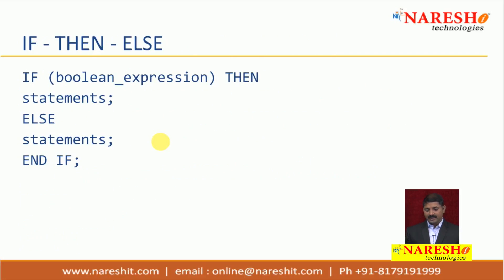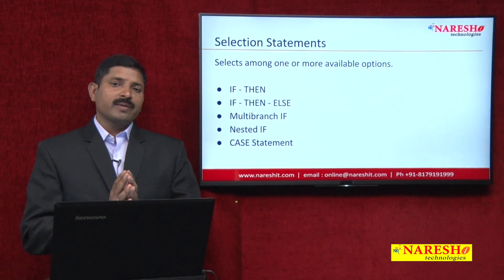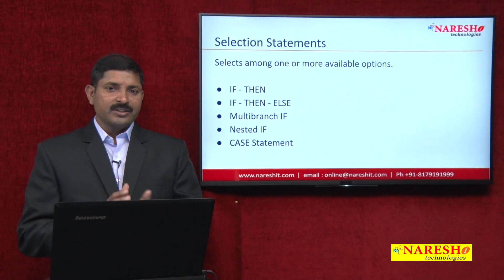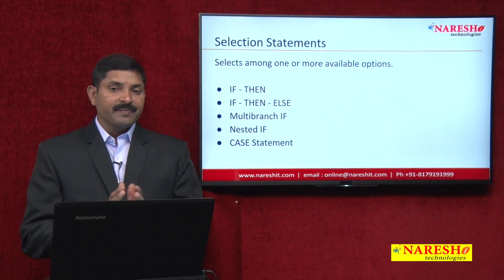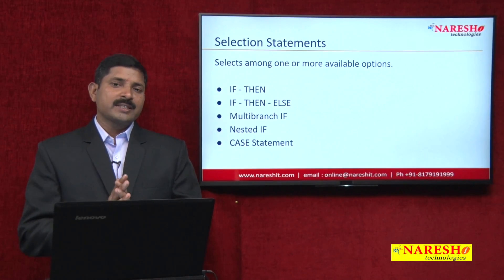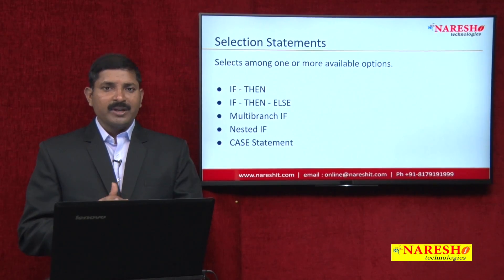So the selection statements we have studied are: IF-THEN, IF-THEN-ELSE, multi-branch IF, nested IF, and CASE statement. This is one part of control structure. The other part — iterative statements — we shall see in the next session. Thanks for watching. If you have any questions, please write them in the comments, and to watch more such videos please visit Nourish IT on YouTube.